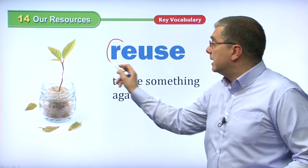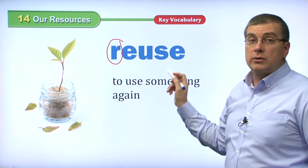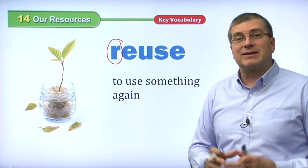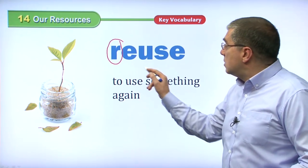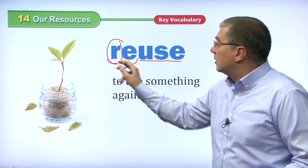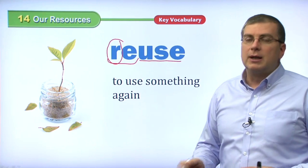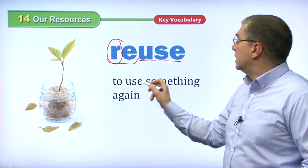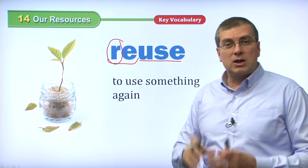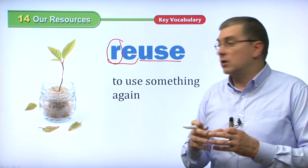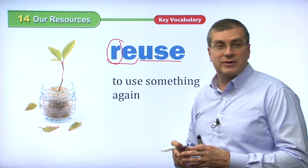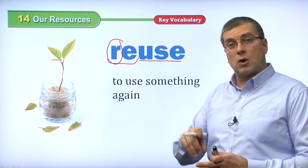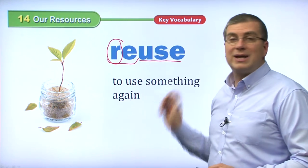The next R is reuse. If we can use something again, that's better than getting a new thing, because getting a new thing is kind of wasting too. Reuse means to use again. So if you have a jar that you've used as packaging for jam or jellies, maybe instead of throwing away the jar and buying a vase, use the jar as a vase and grow a plant from it. That's a good idea to reuse something.